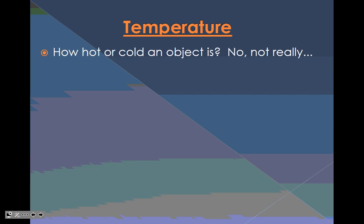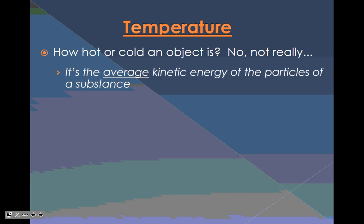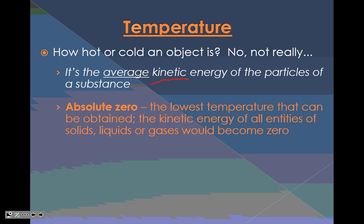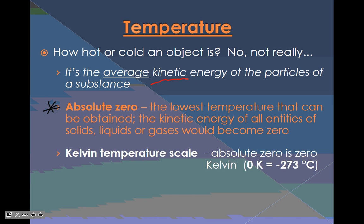So let's take a look at temperature. It's how hot or cold an object is. Well, no, not really, not for chemistry. It's the average kinetic energy of the particles of a substance. And you guys remember kinetic energy means energy of movement. And we look at the particles in terms of movement. Absolute zero is the coolest thing ever. It's the lowest temperature that can be obtained to the kinetic energy of all entities of solids, liquids, or gases would become zero. Movement stops kiddos at absolute zero. So at Kelvin temperature scale, absolute zero is zero Kelvin. Zero Kelvin is equal to negative 273 degrees Celsius-ish. It's actually negative 273.15 degrees Celsius in the negative. That's pretty cold.